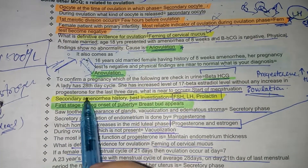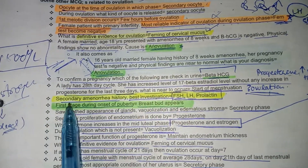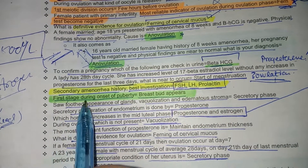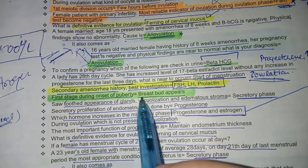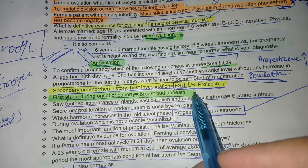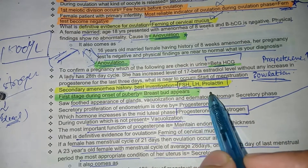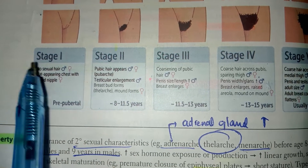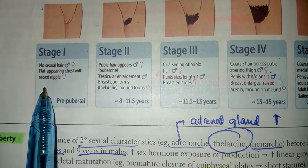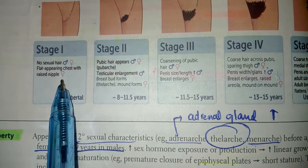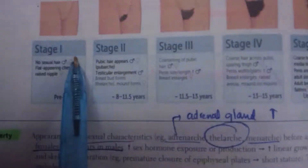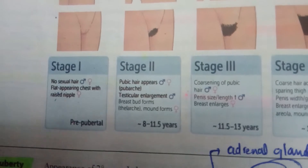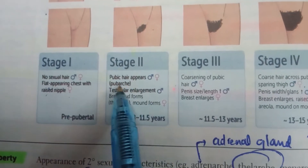For secondary amenorrhea, the best investigation is FSH, LH, and prolactin. Regarding puberty stages (Tanner stages): the first stage shows no pubic hair, flat chest with raised nipple in both males and females. In stage two, pubic hair (pubarche) appears along with testicular enlargement and breast bud formation. Thelarche — breast bud appearance — is the first sign of puberty in girls.